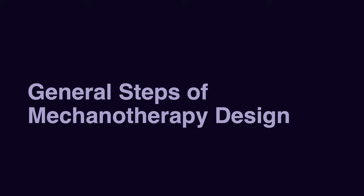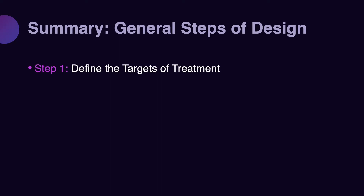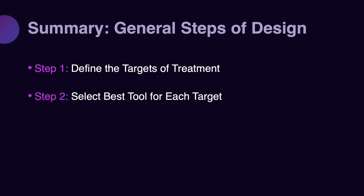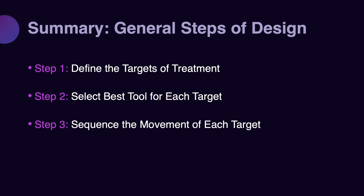Design of mechanotropy has three important steps. The first step is recognizing the target that you are treating. The second step is to use your biomechanical and biological science to find the most optimized treatment for each singular target that you need to move on that patient. The third step is to sequence which of these mechanical designs need to be applied first, which one second, and so on and so forth.